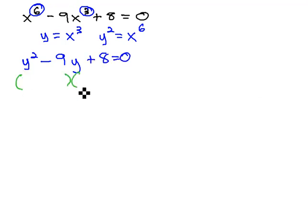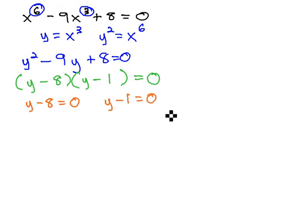This equation can easily be factored in order to help us solve for y. We end up with y minus 8 and y minus 1, and then we can set each of those factors equal to 0. y minus 8 equals 0, and y minus 1 equals 0.